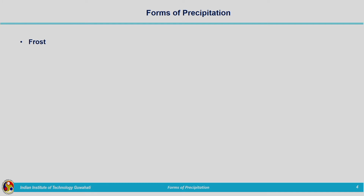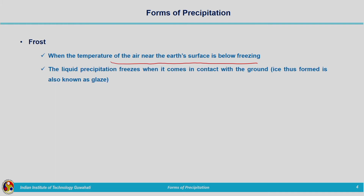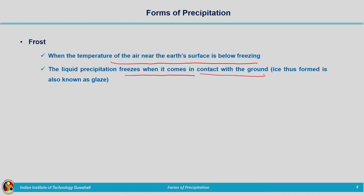Next is frost. From the name itself we get some idea. Frost occurs when the temperature of the air near the earth's surface is below freezing. Near the ground surface the temperature can be very low, so the precipitation falling on the ground will freeze due to that low temperature. The water droplets falling onto the ground will freeze when they come in contact with it, converting to ice. This type of precipitation — the ice formed by this process — is termed glaze.